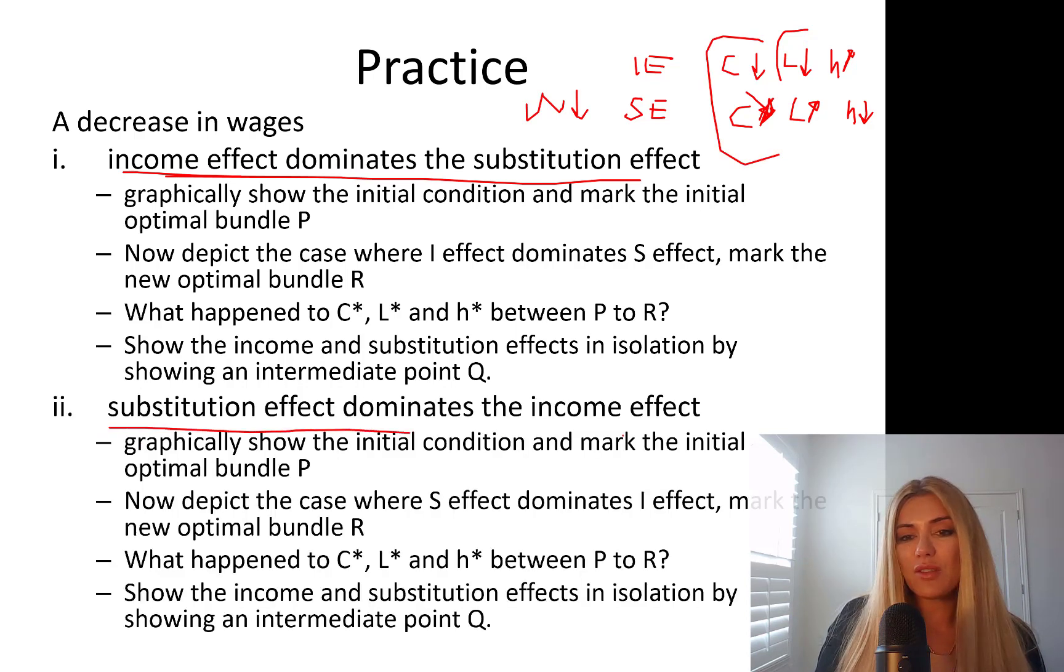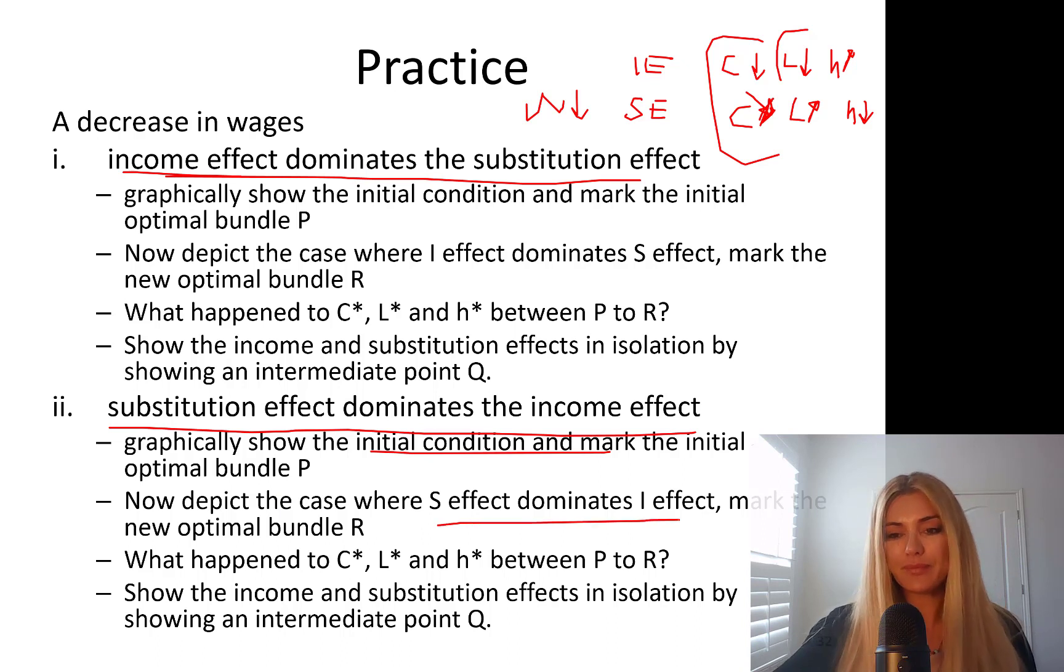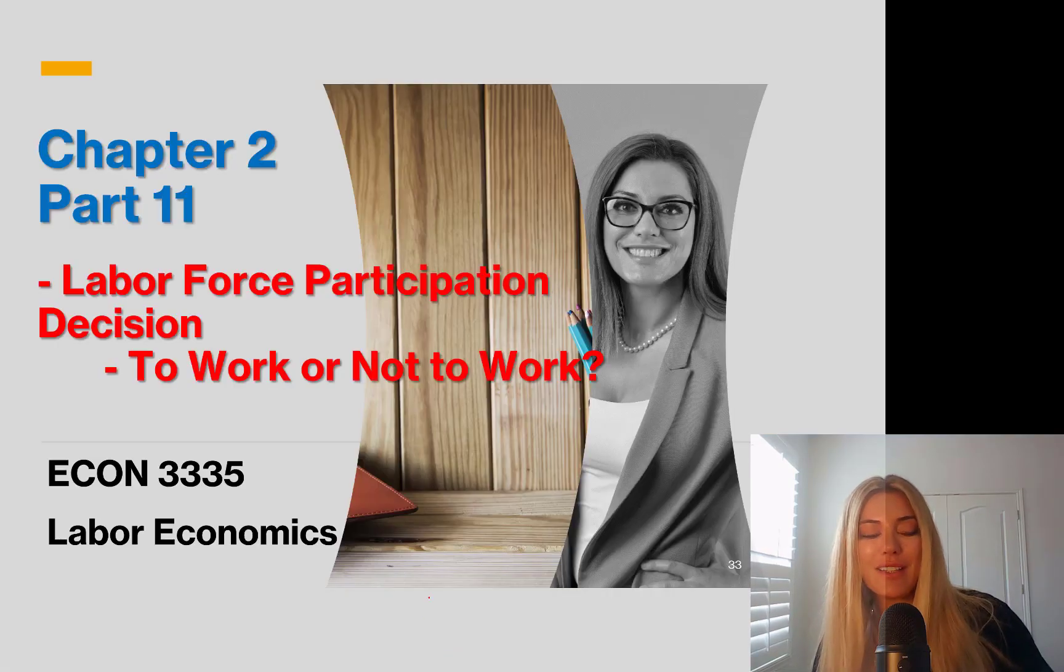If substitution effect dominates, graphically show the initial condition and mark the initial bundle. Depict the case where substitution effect dominates income effect. Mark the new optimal bundle R. What happened to consumption leisure hours between P and R? And show income and substitution effects in isolation. That's it. I'll see you in part 11.